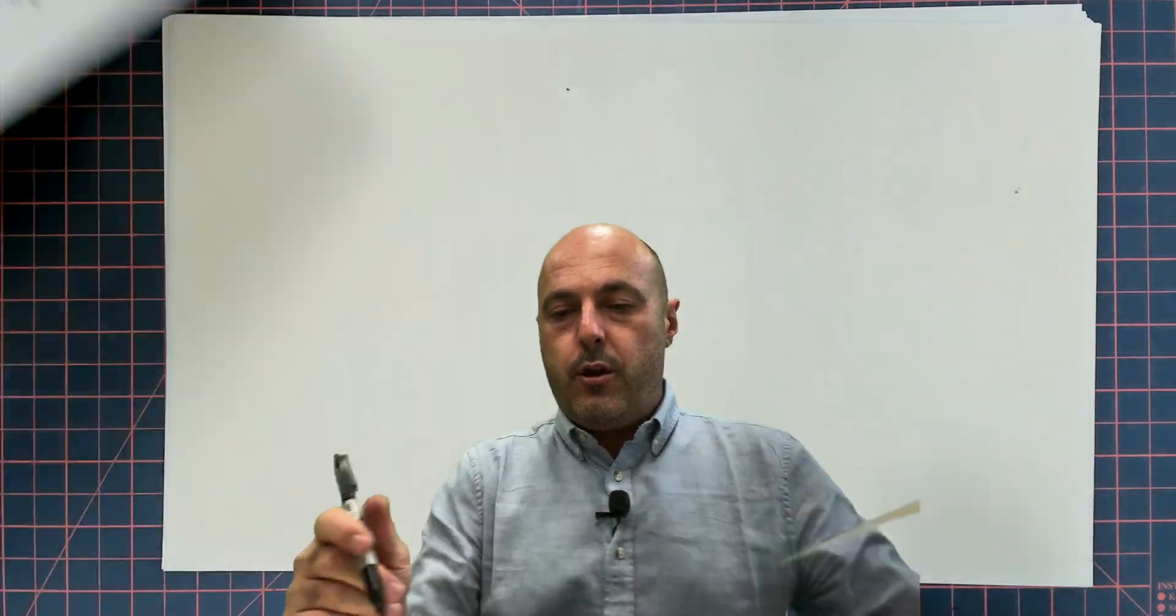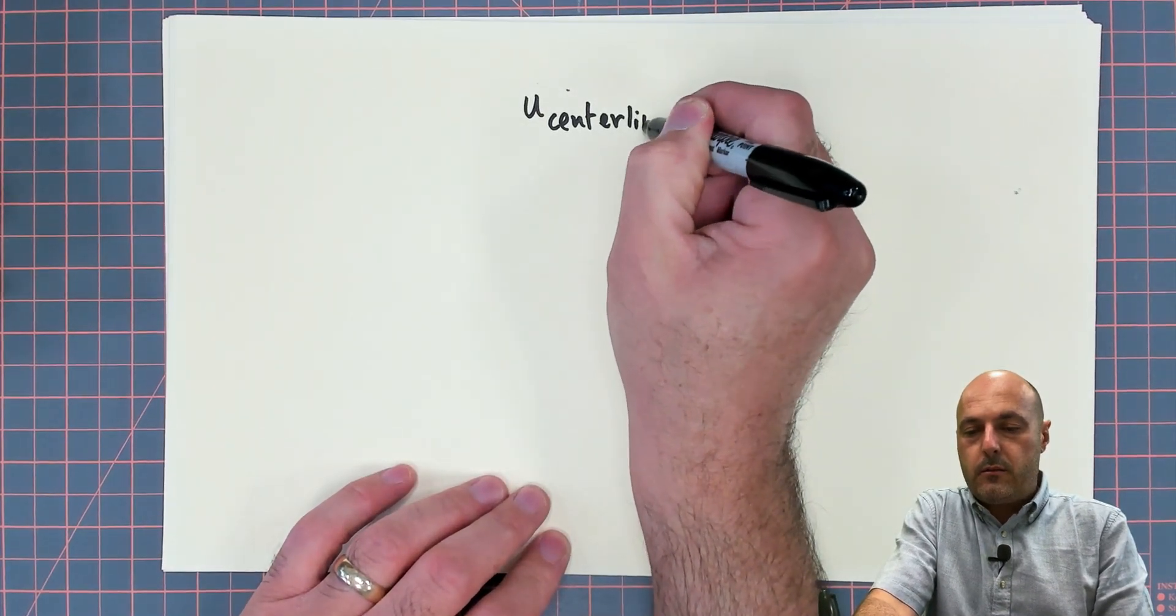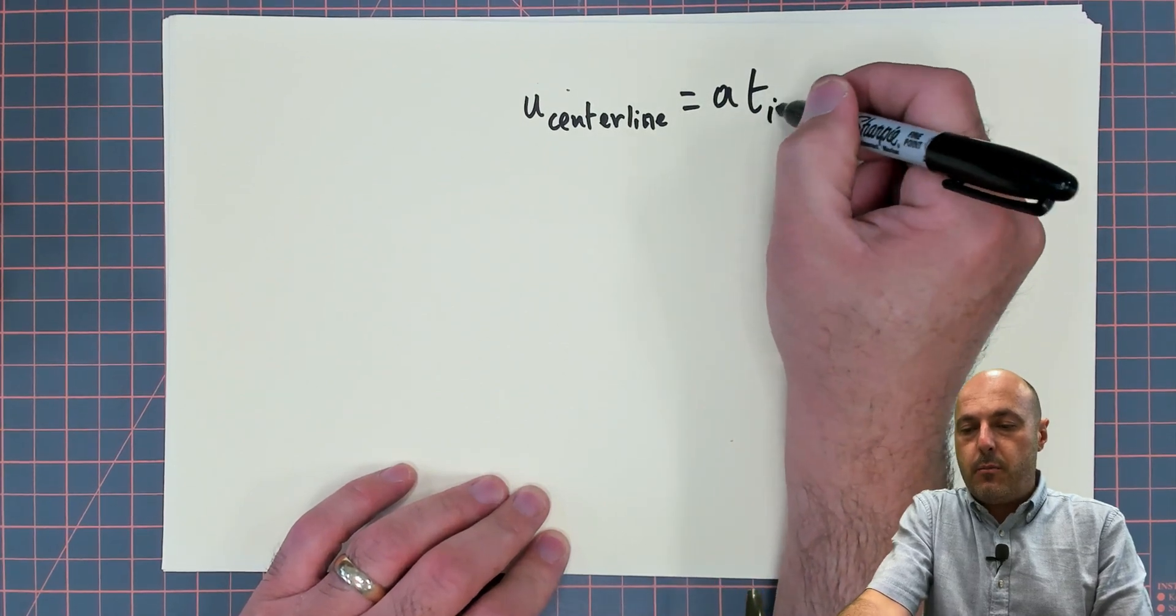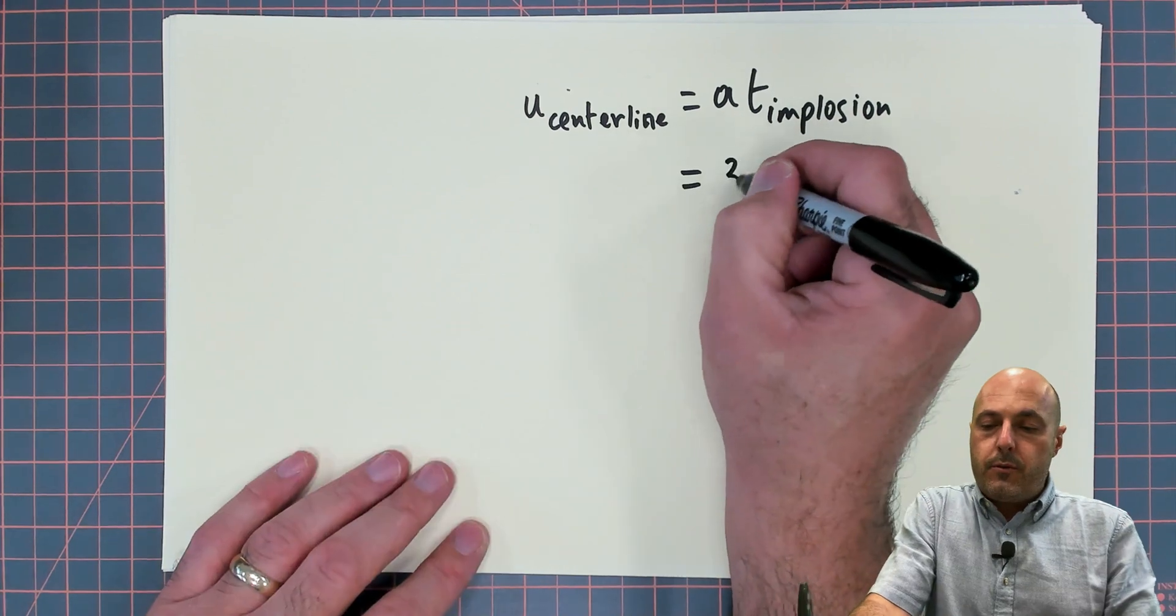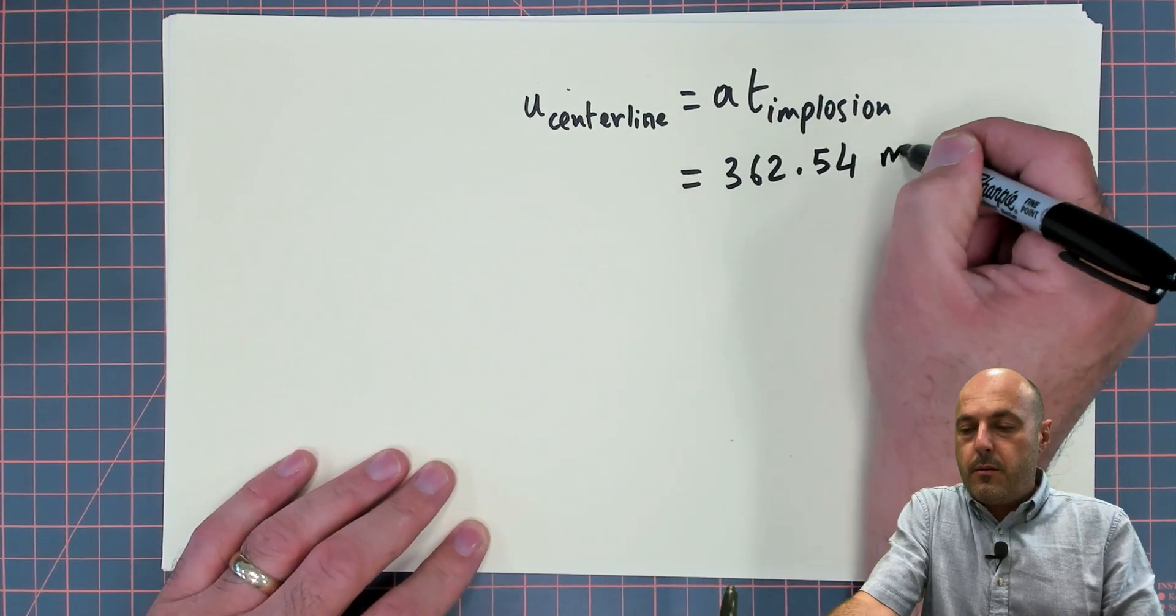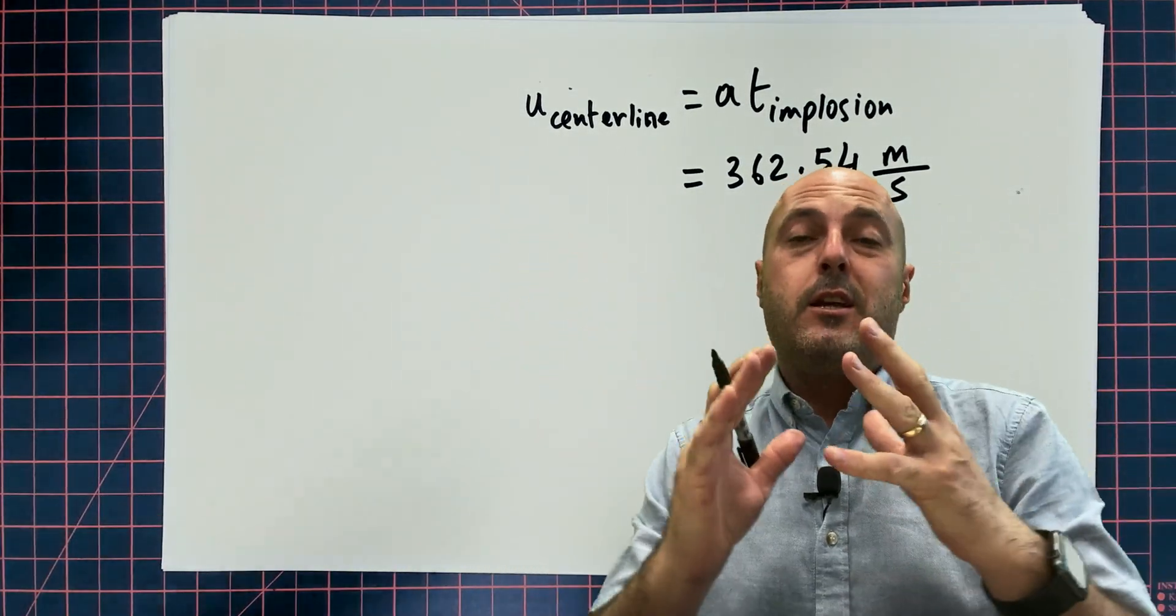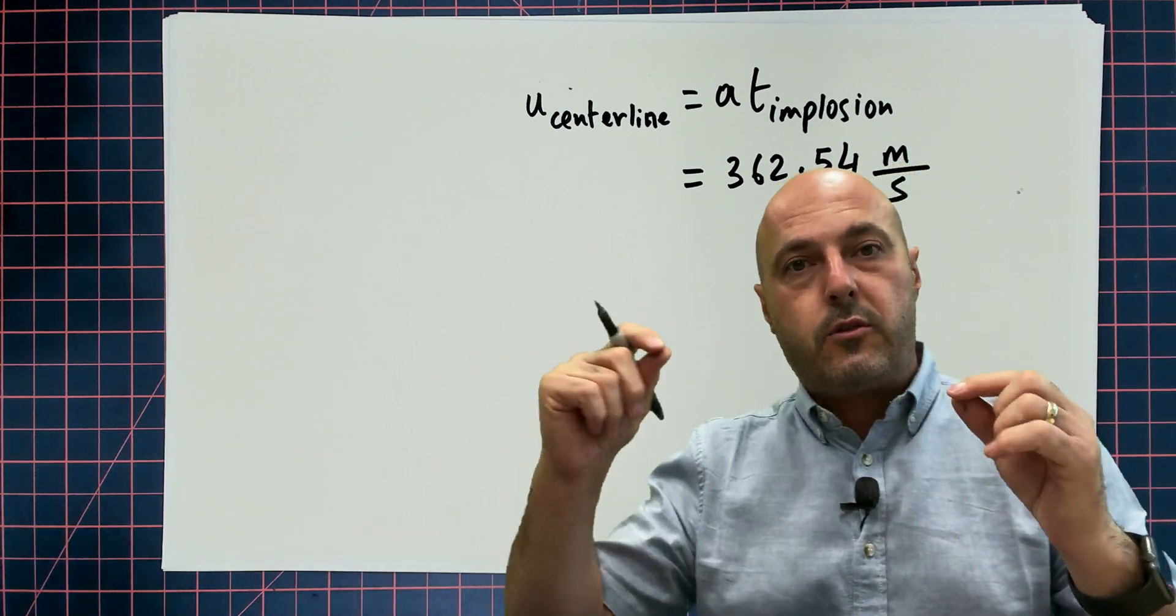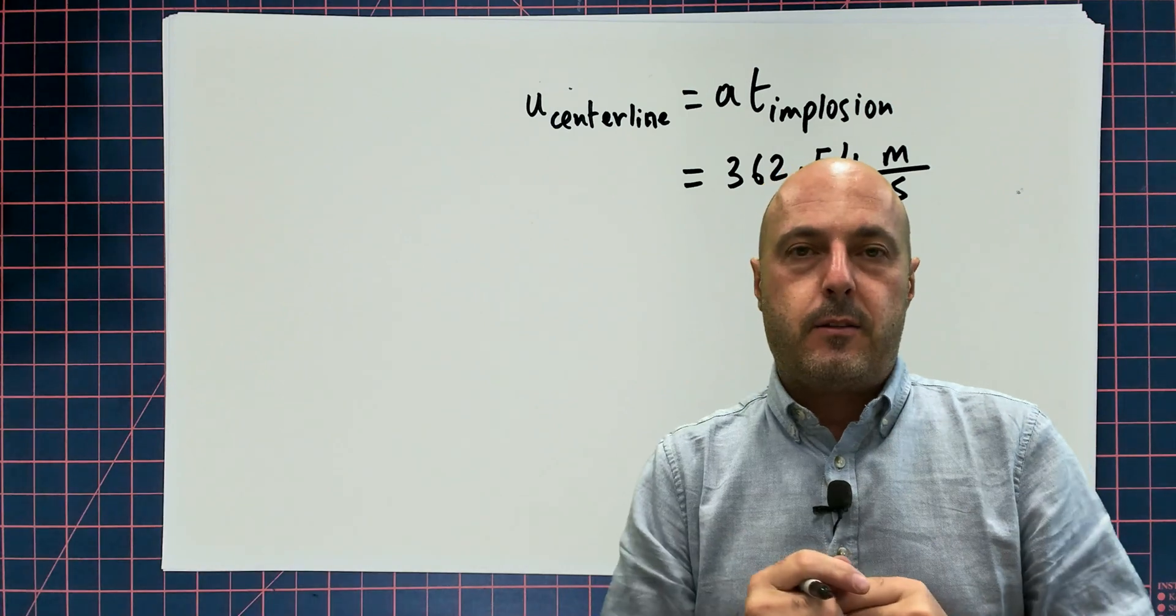And you could do u_centerline is equal to a times t_implosion. That gives you about 362.54 meters per second at the centerline. Now, remember, as the hull is accelerating at this constant, the speed is changing linearly. So it gets faster and faster from t equals 0. But then at the centerline, it is the fastest.